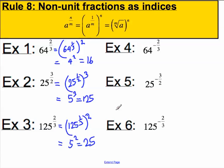Example 4, 5, and 6 are exactly like 1, 2, and 3, except we've got negative indices here. Negative indices mean 1 over. 64 to the minus 2 3rd must be 1 over. 64 to the 2 3rd is 16. This must be 1 over 125, and this last one must be 1 over 25.